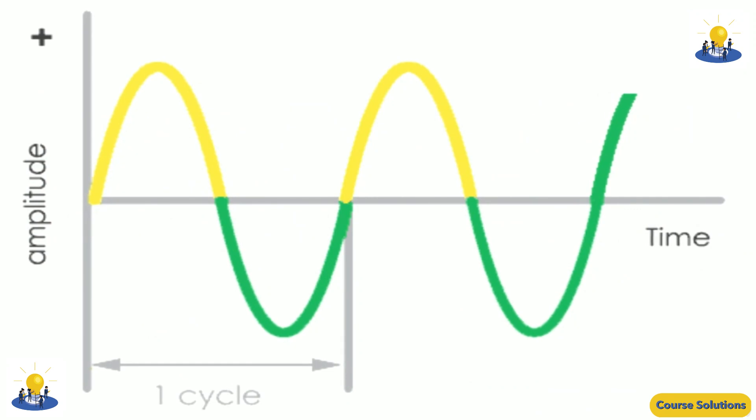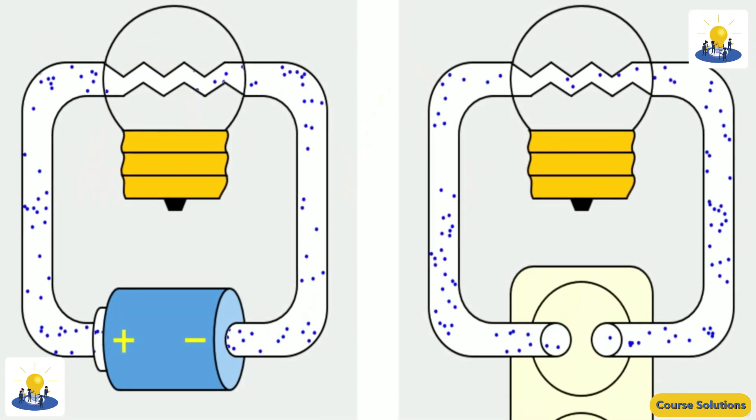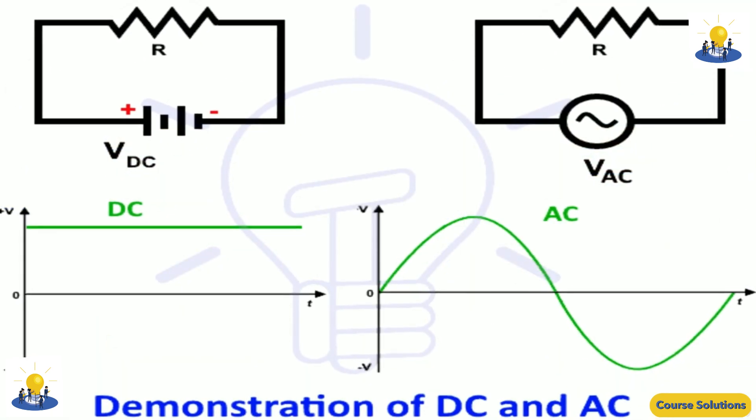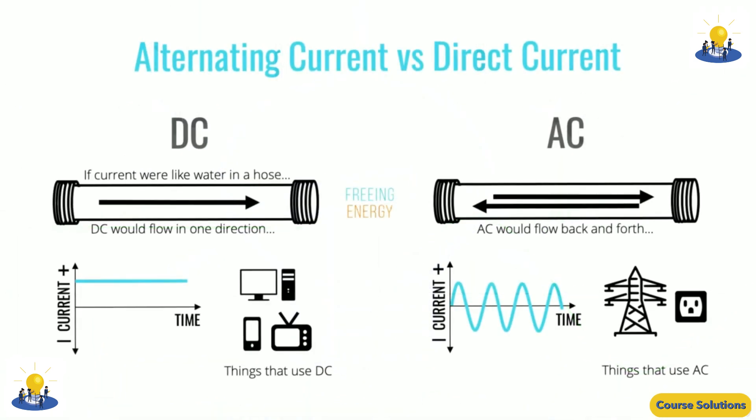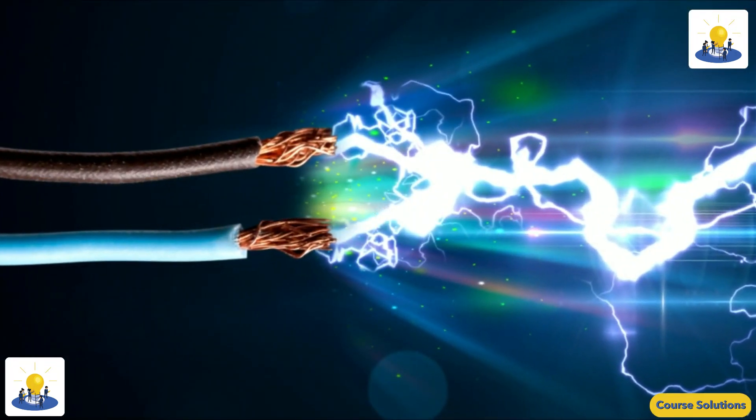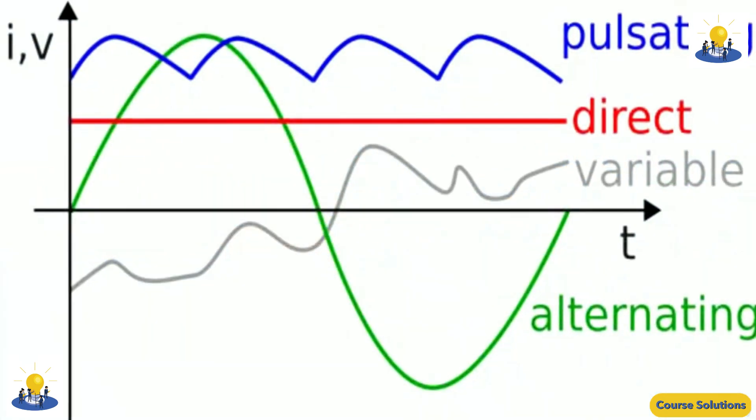An electric current that flows continuously in a single direction is called a direct current, or DC. The electrons in a wire carrying direct current move slowly, but eventually they travel from one end of the wire to the other, because they keep plodding along in the same direction.